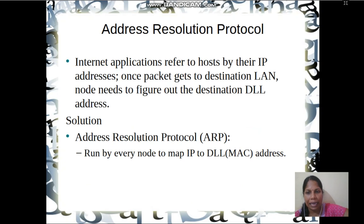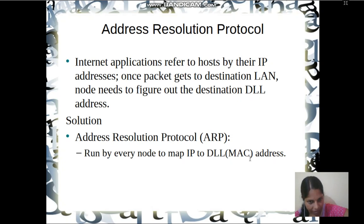To summarize ARP: it is the mapping of an IP address to a hardware address. This hardware address is also known as the data link layer address or Medium Access Control (MAC) address. This IP-to-hardware address mapping process is called Address Resolution Protocol.